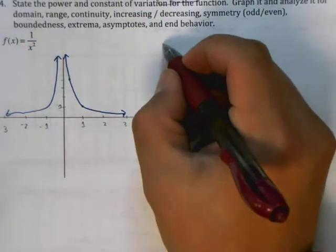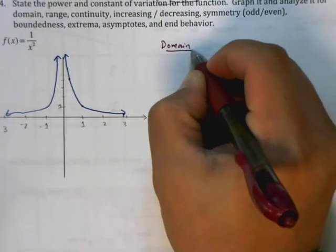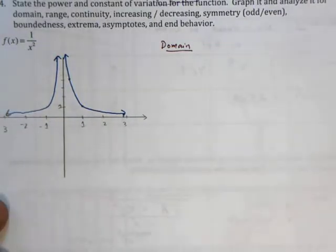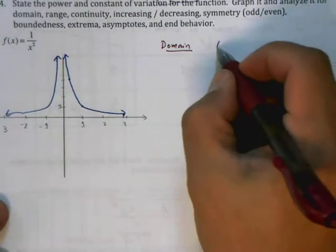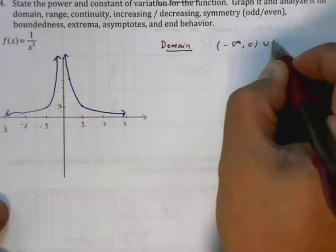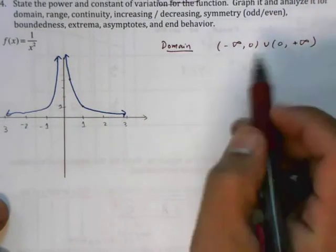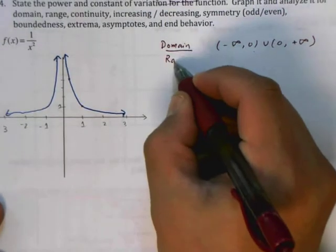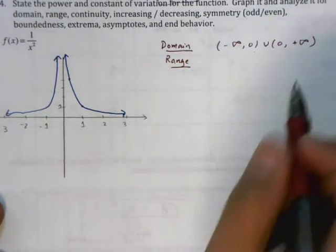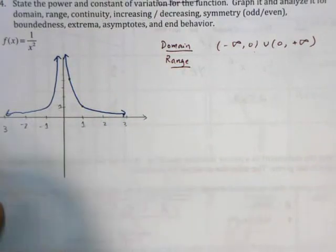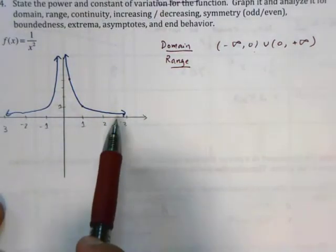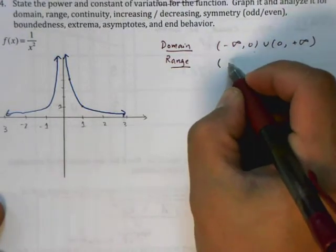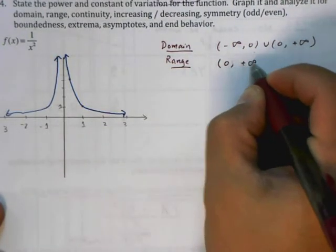Graph it and analyze it for the domain. Well, the domain, you can substitute anything in here for x except 0, right? So x cannot be 0. So this is negative infinity to 0, union 0 to positive infinity. Exclusive, I'm using parentheses for all of my intervals here. The range, again, the graph is very useful. So you can see that it looks like it's going to have a horizontal asymptote here at 0. So the range is anything greater than 0. Anything from 0 to positive infinity.